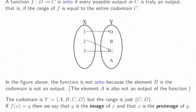If f(x) = y, we say that y is the image of x and that x is the preimage of y. A function is onto means that every element of the codomain has a preimage.